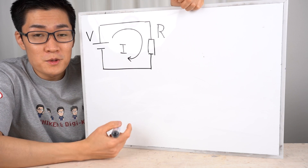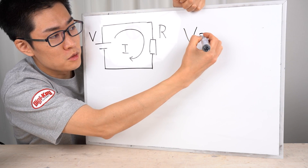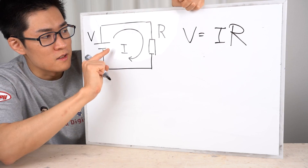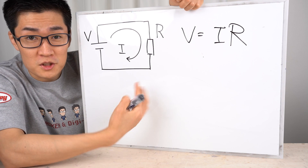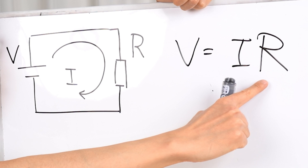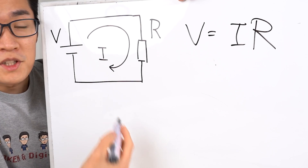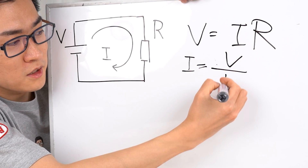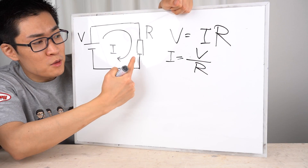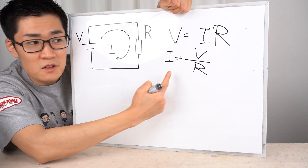When a resistor and a power supply are connected in series, V equals IR according to Ohm's law. V is the power supply voltage, I is the current flowing through the resistor, and R is the resistance value of the resistor. This resistance is called electrical resistance. Electrical resistance is a measure of opposition to the flow of electric current. Higher resistance allows less current to flow; lower resistance allows more current to flow. The unit of electrical resistance is Ohm. We can transform the formula to calculate current: I equals V divided by R.